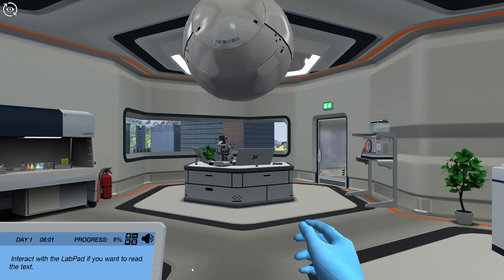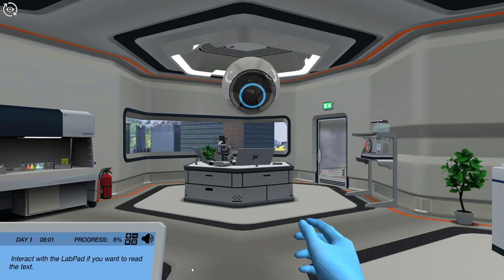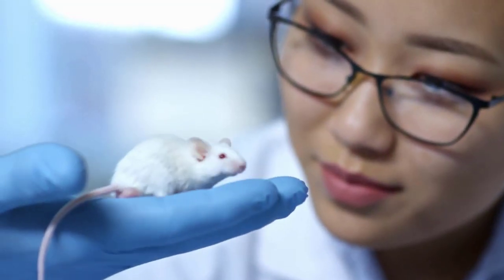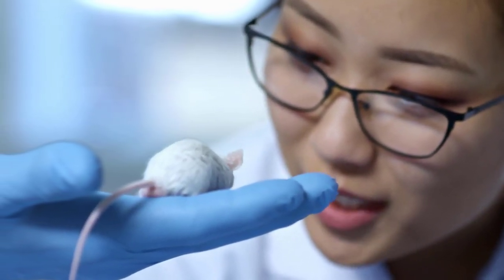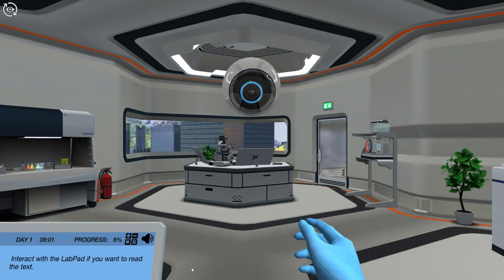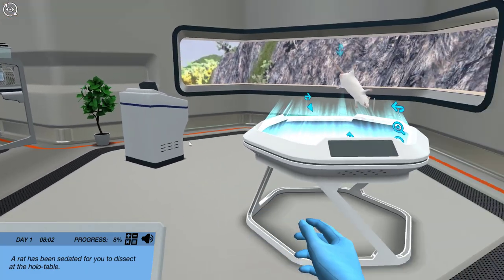Hi, I'm Dr. One. I saw how perplexed you and your friends were about the different muscles for running and walking. Today, discovering the difference begins with dissecting rat muscles for the experiment. A rat has been sedated for you to dissect at the hollow table.